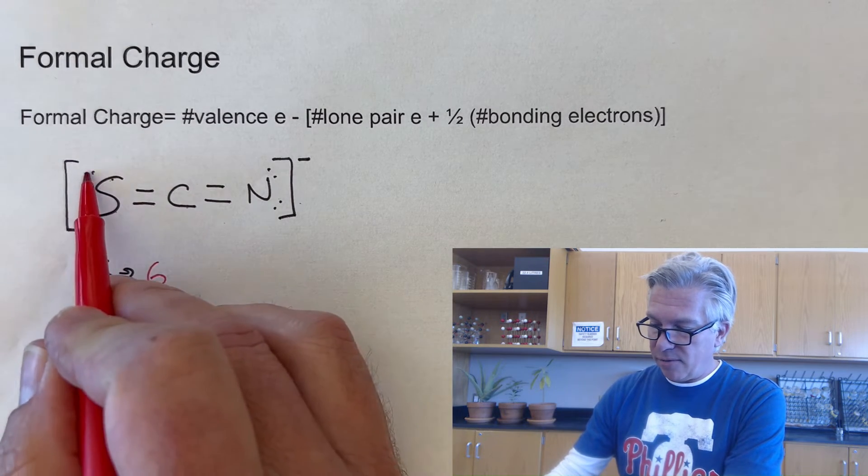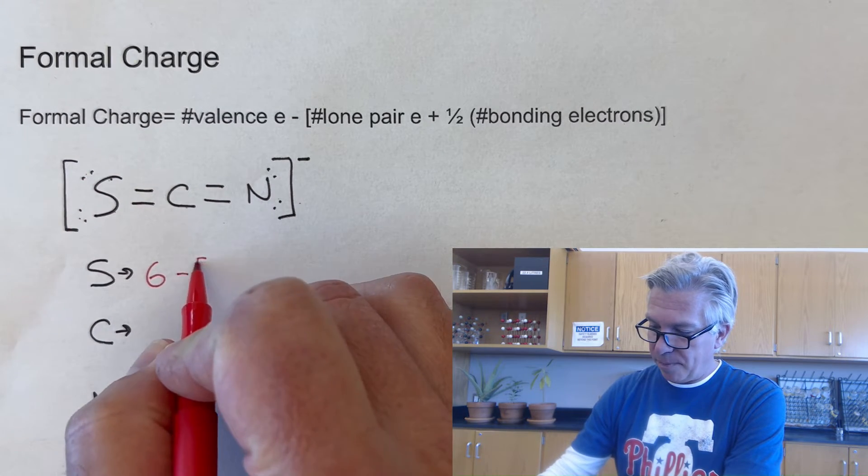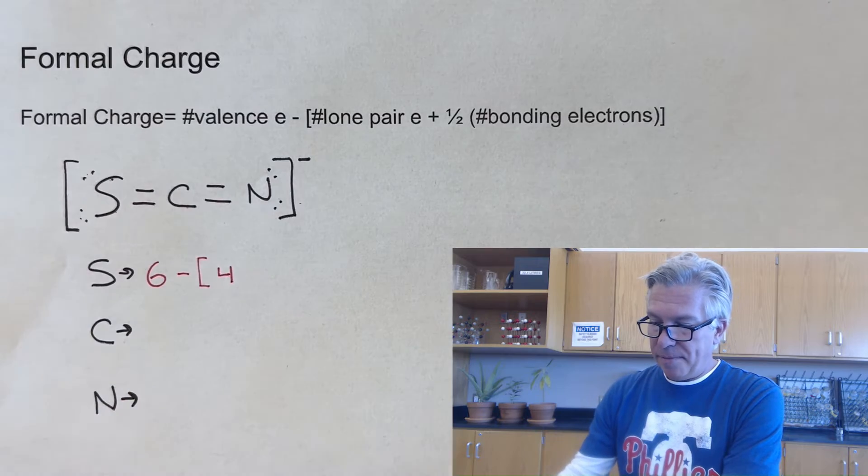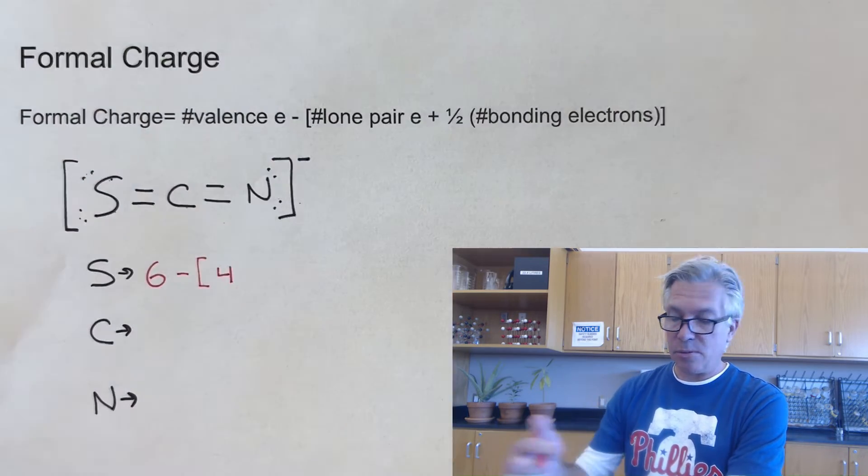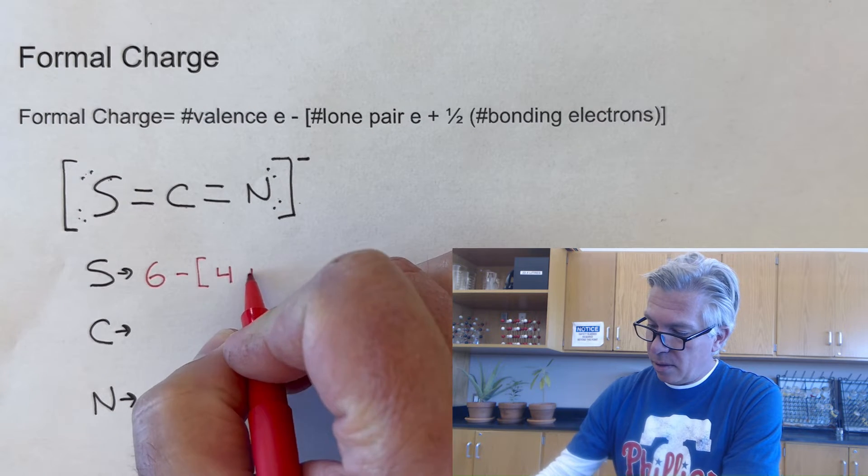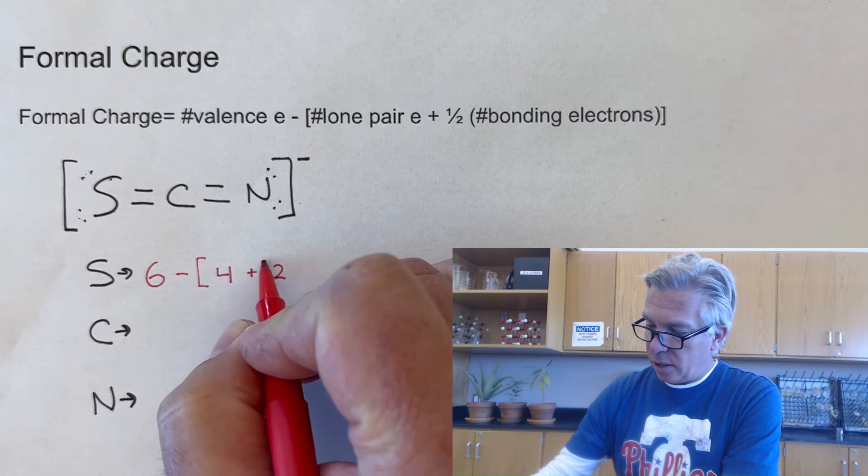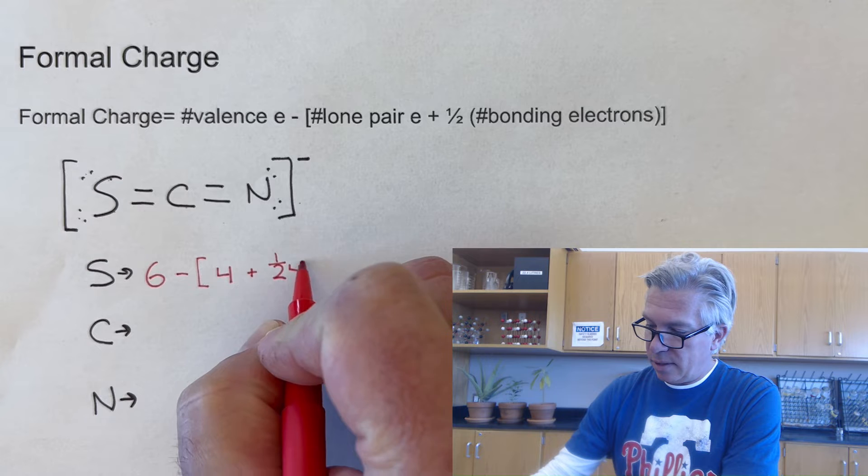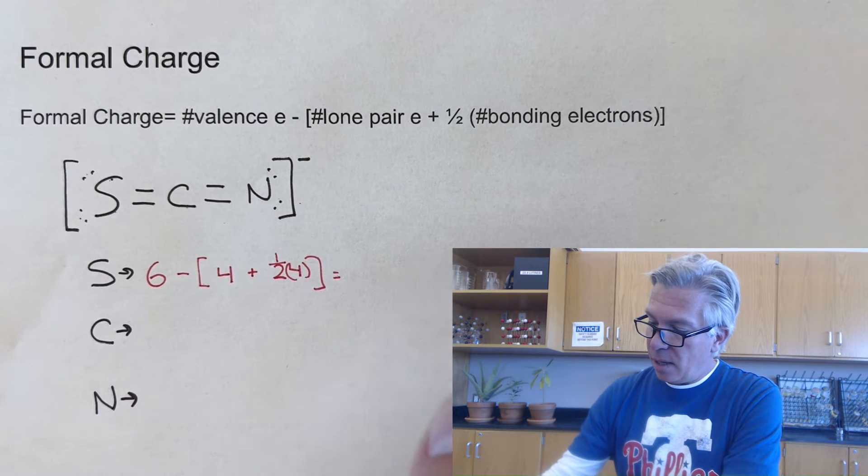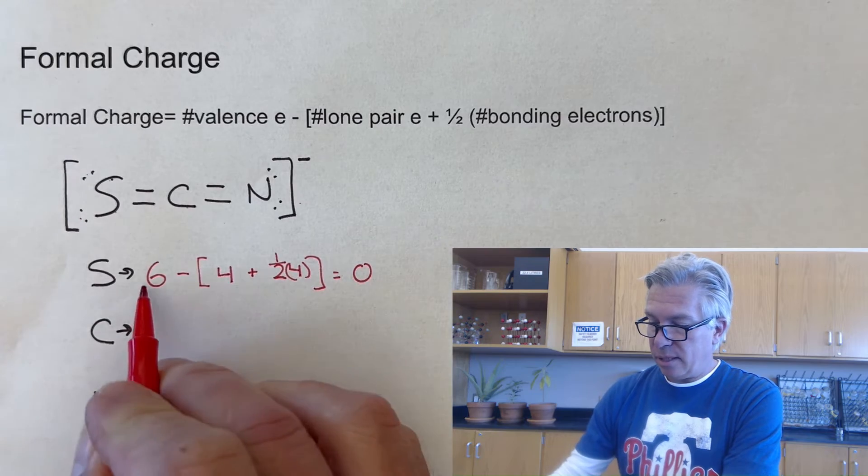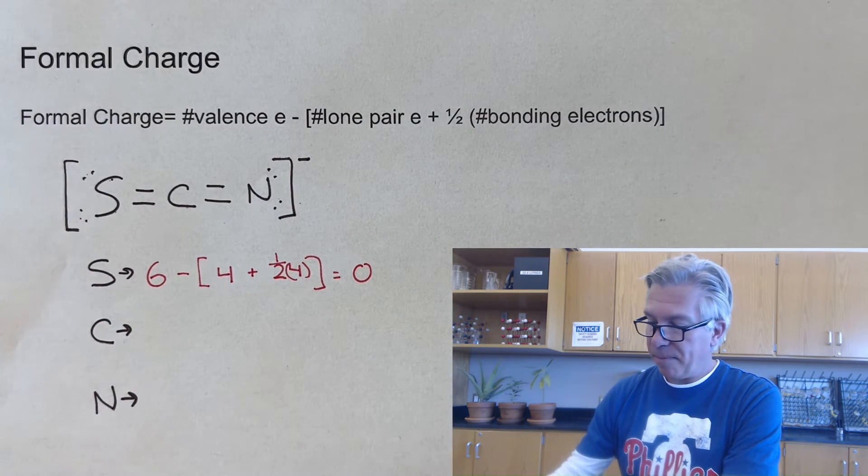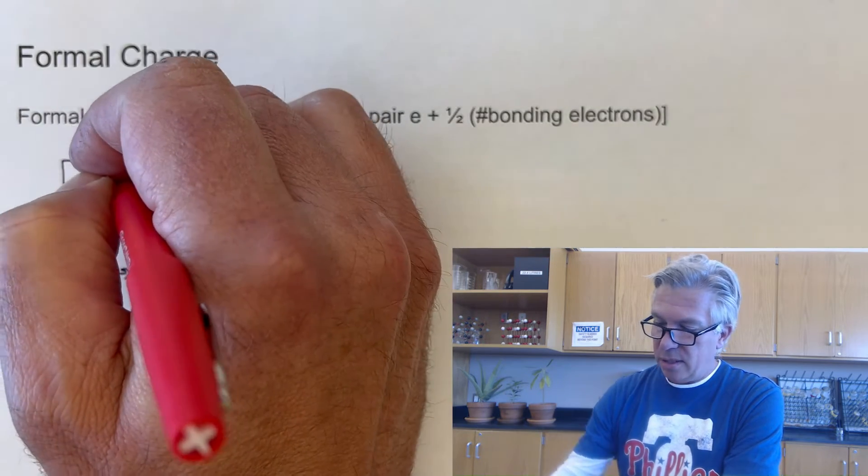Now in the final molecule, it has four lone pair electrons right there. And it's also got two bonds, which is four electrons, but half of those belong to the sulfur. So two, actually I'll do one half of four, so it's a little more clear where it comes from. And we get a formal charge of zero because six minus four plus two is zero. So this formal charge is zero.